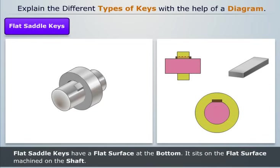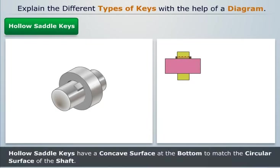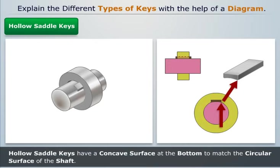Flat saddle keys have a flat surface at the bottom and sit on the flat surface machined on the shaft. It is likely to slip round the shaft under load so it is used for comparatively lighter loads. Hollow saddle keys have a concave surface at the bottom to match the circular surface of the shaft.